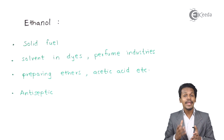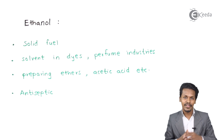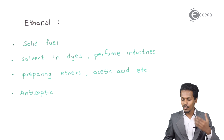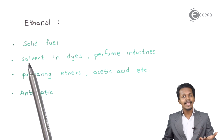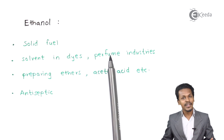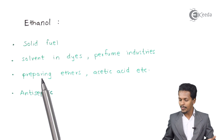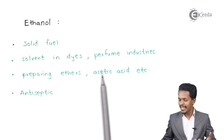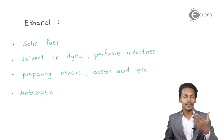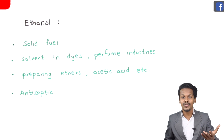Ethanol is used as a solvent in dye industries and perfume industries as well. It is also used in the preparation of ethers and acetic acid, which we have already covered in our chemical properties and chemical preparations of alcohol.